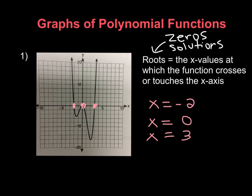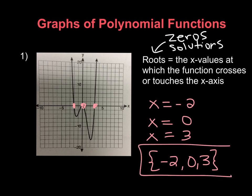What they do is take the solutions and put them in curly brackets. Keep in mind, they separate them by commas and put them in ascending order, so from least to greatest. That would be our answer, which looks like choice four.